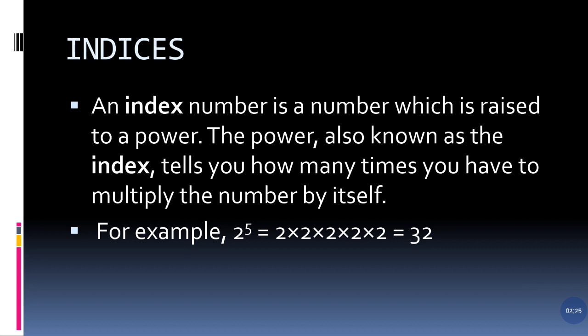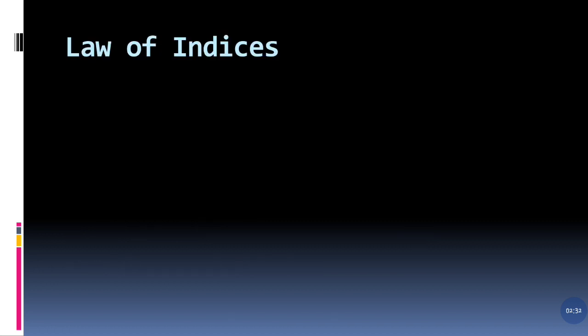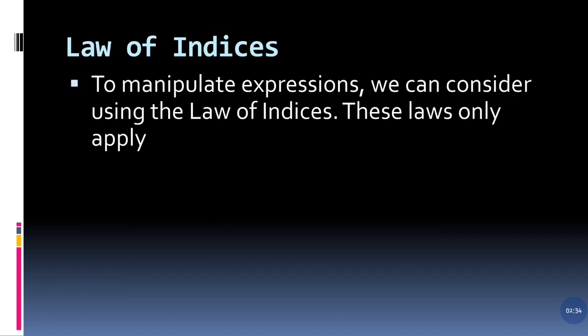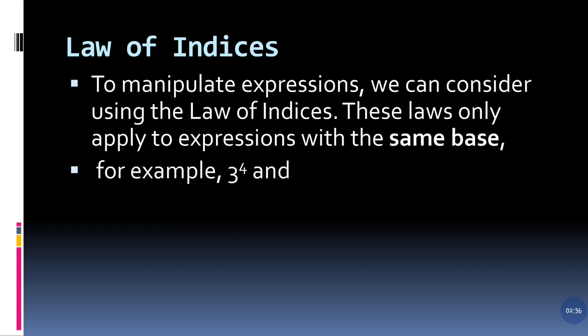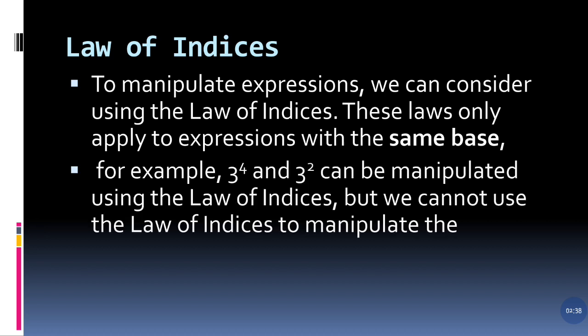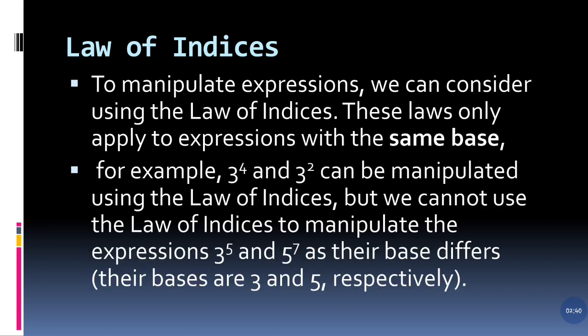In this expression, 2 is called the base and 5 is called the index or power. We can use the laws of indices when the bases are the same — for example, 3 to power 4 and 3 squared have the same base. But if we have 3 to power 5 and 5 to power 7, the bases are different, so we cannot use the laws of indices.